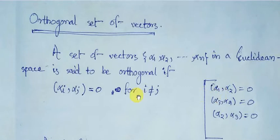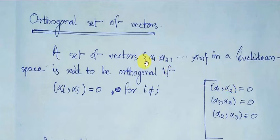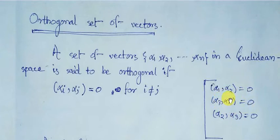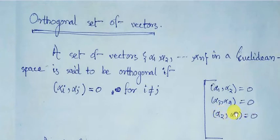Let us see this definition with specific examples. For two distinct members alpha 1 and alpha 2, the inner product value must be equal to 0. Similarly, for distinct members alpha 3 and alpha 4, the inner product of alpha 3 comma alpha 4 must also equal 0. Likewise, alpha 2 comma alpha 3 equals 0 for two distinct components.